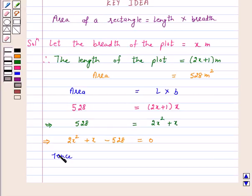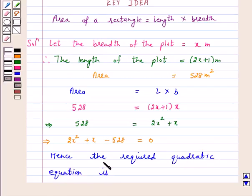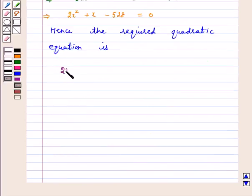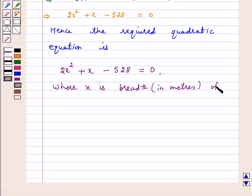Hence, the required quadratic equation is 2x square plus x minus 528 is equal to 0, where x is breadth in meters of the plot. This is our answer. I hope the question is clear to you. Bye and have a good week.